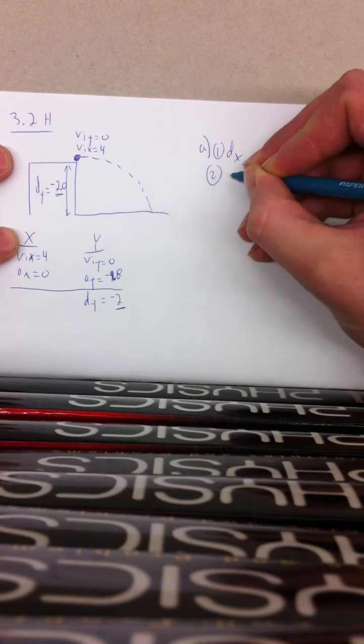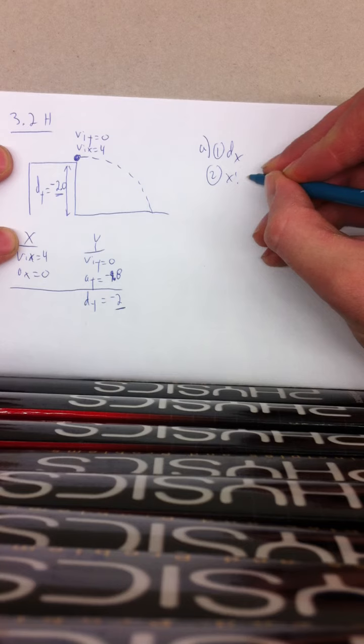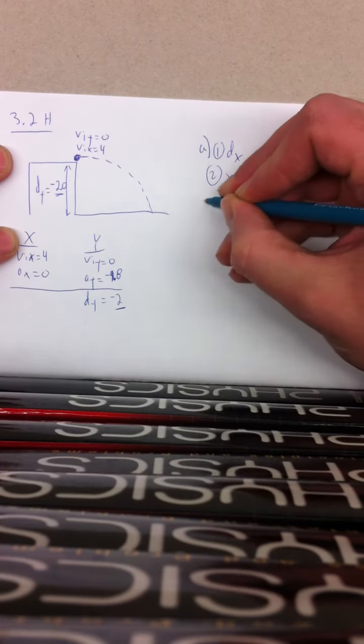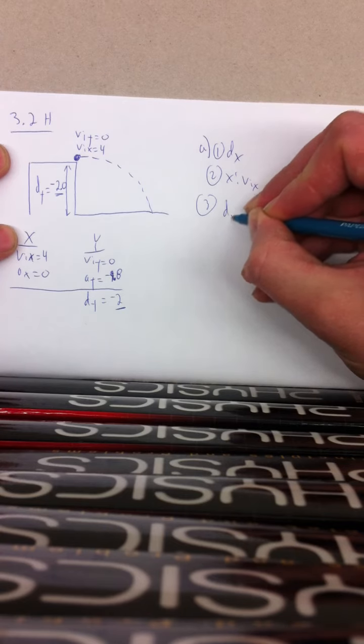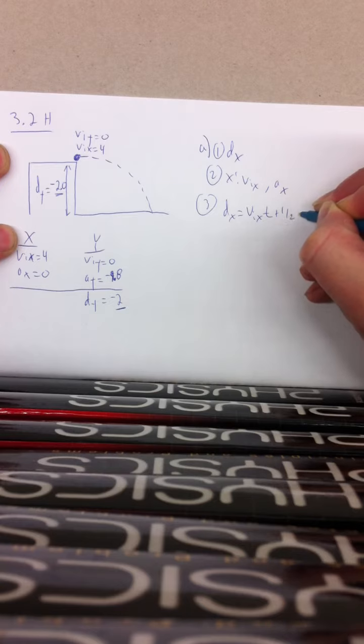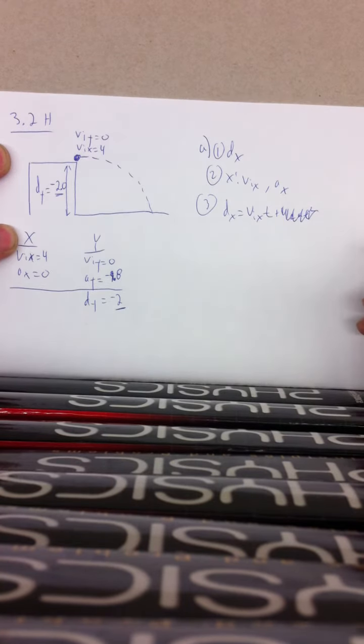Step 2, using the x column, we have vix and ax. Step 3, there's only one equation to use. dx is equal to vix t plus 1.5at squared. This gets cancelled out because acceleration is equal to 0.